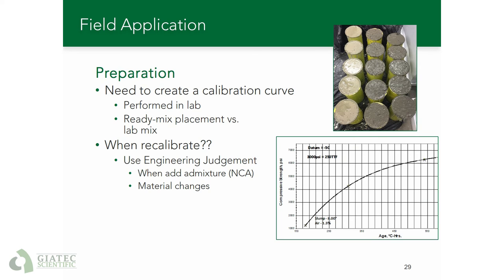As far as recalibrating, that is probably the most difficult question and requires some engineering judgment. Anytime there is a material change, especially cementitious materials, you should definitely recalibrate. Also, whenever using any admixtures that might affect the rate of strength gain. For example, many contractors like to use two to three percent non-chloride accelerator in the mix during the winter, and then in the spring may want to take that out and go back to an unmodified mix — that would be a good time to recalibrate in case the rate of strength gain is a bit lower. Shown in the bottom right is an example of a maturity calibration graph.